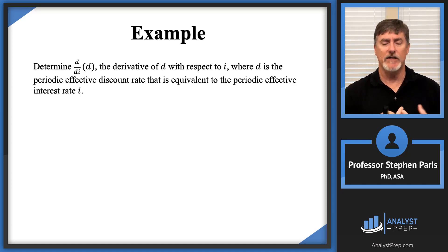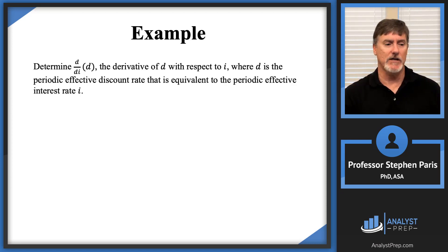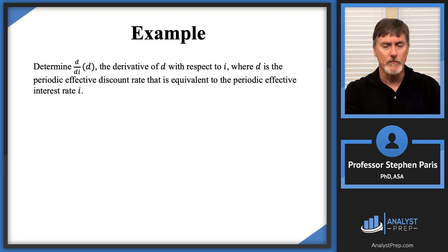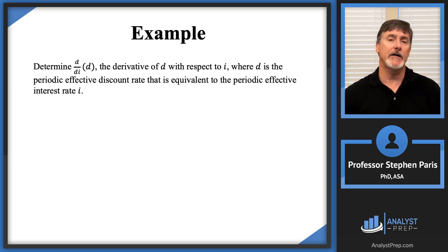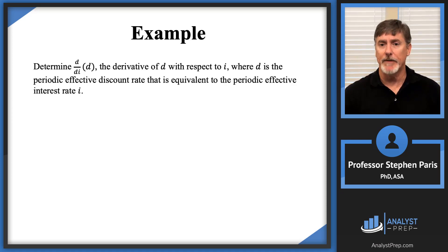For example, the monthly effective discount rate for the first month is the same as the monthly effective discount rate for the second month and so forth. That's when they call it the periodic effective discount rate — there's no time period. It's implied that we're compounding.